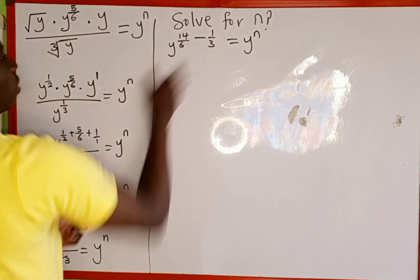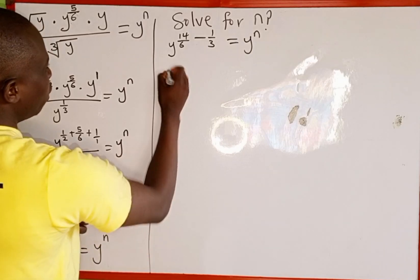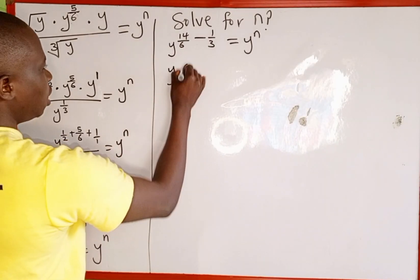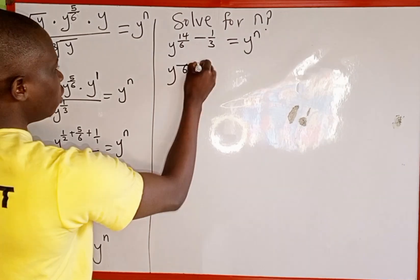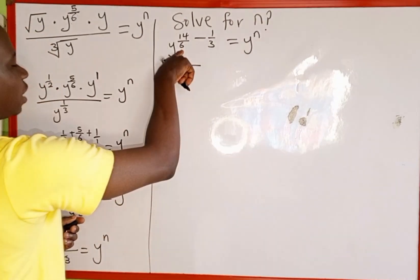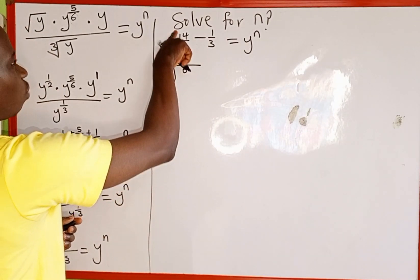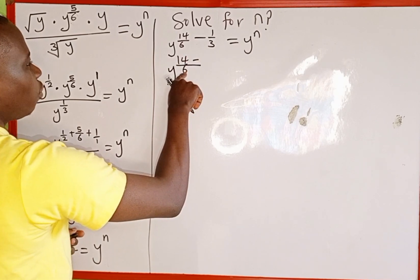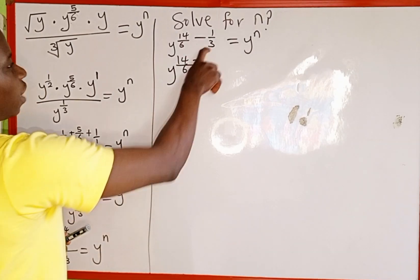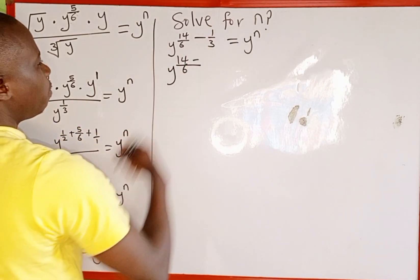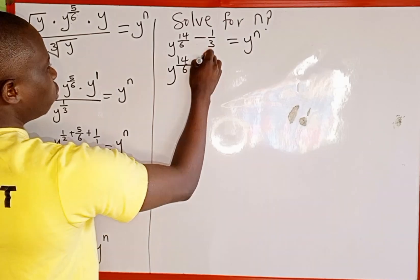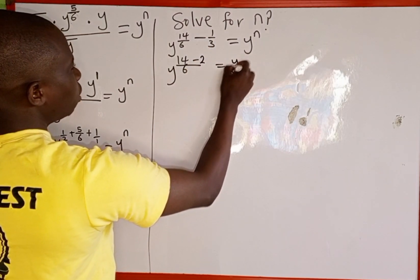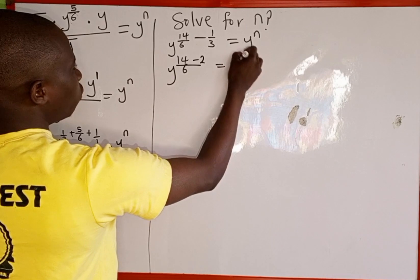The next thing is to simplify this power. The LCM of 6 and 3 is 6, then we draw a division line. 6 divided by 6 is 1, then 1 multiplied by 14 is 14; minus 6 divided by 3 is 2, and 2 multiplied by 1 is 2, all over 6. This is equal to y raised to the power of n.